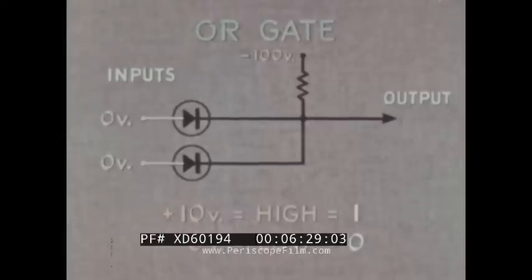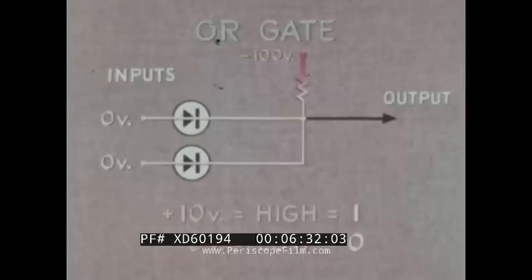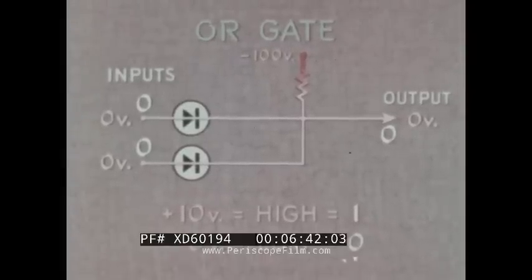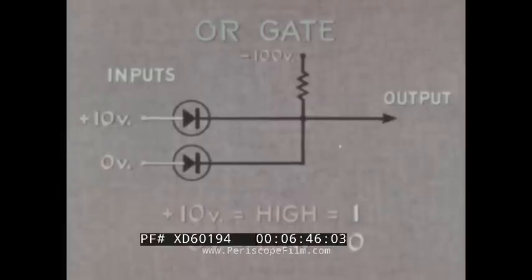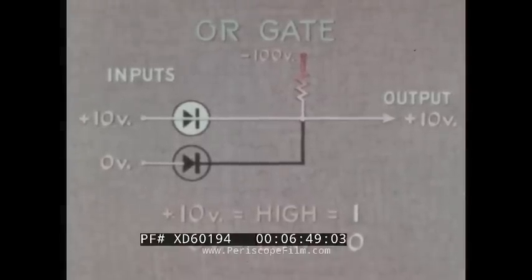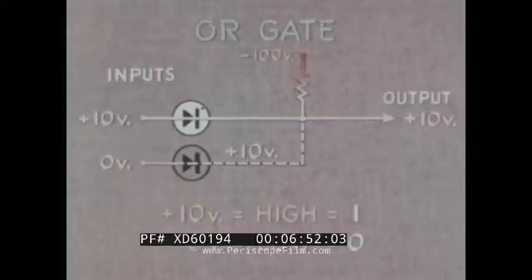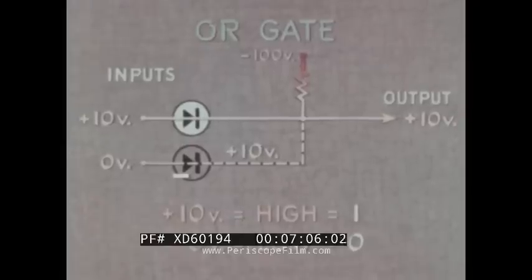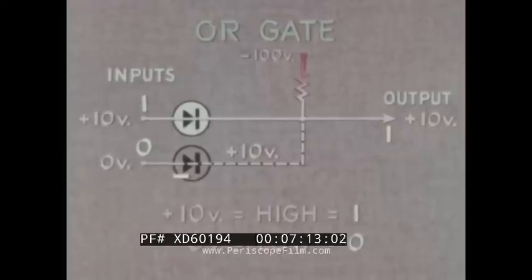When both inputs are low, both diodes again conduct, resulting in the low output — binary zeros in, binary zero out, again correct. When one input is high, it conducts and the output is high. This voltage is on the cathode of the other diode, which has a low input. Its anode, with low voltage on it, is more negative than the cathode and therefore cuts off the flow. This condition does not matter in an OR gate circuit; the rule being that with a binary one at any input, the output is one. One OR one input gives a one output.